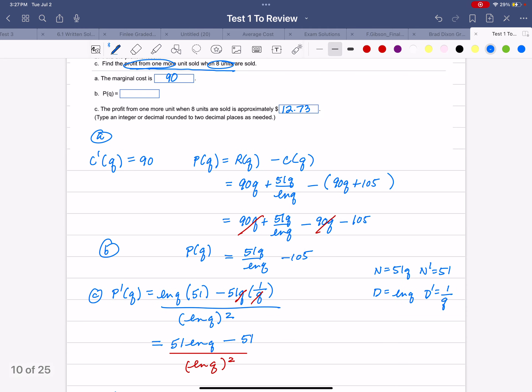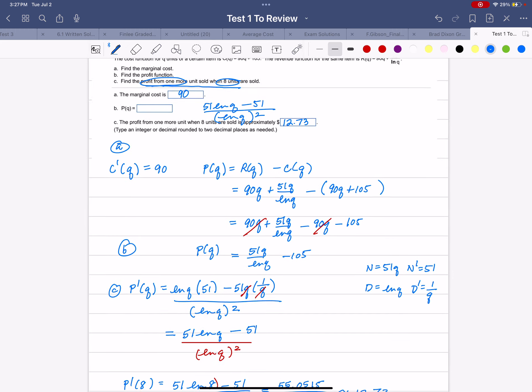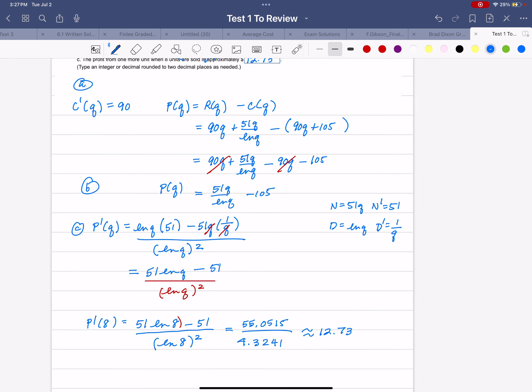Let me write this in: 51 natural log of Q minus 51 over the natural log of Q, with required parentheses. You're not doing the natural log of Q squared. You're finding the natural log of Q, and then you're squaring it. Make sure you have those parentheses.